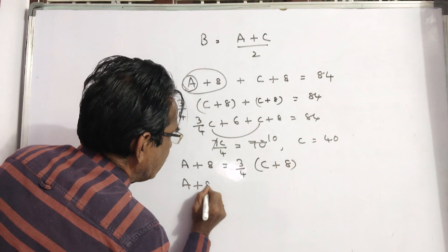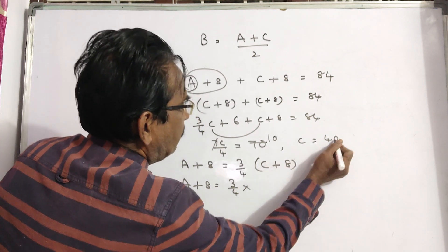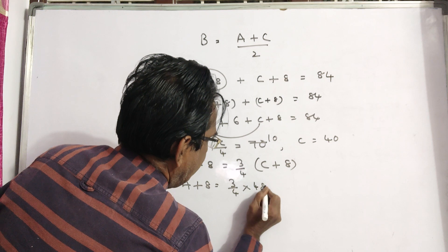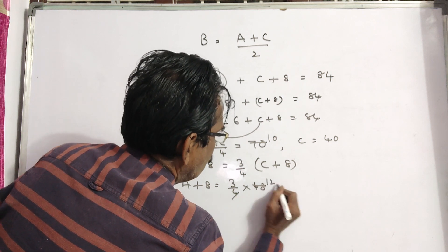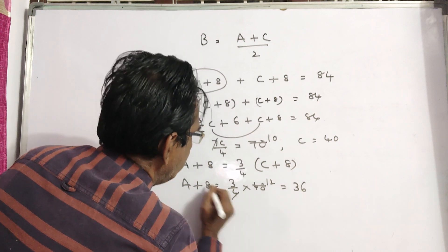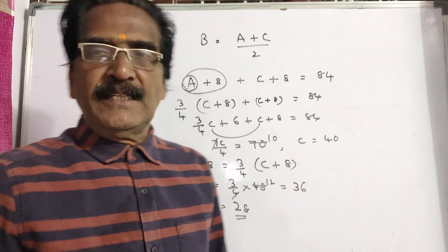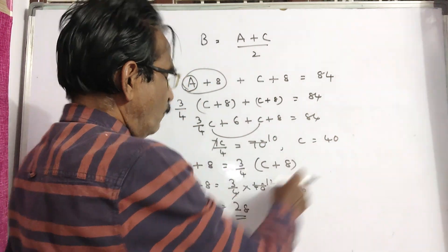So A plus 8 is equal to 3 by 4 into 40 plus 8, which is 48. 48 by 4 is 12, times 3 is 36. Then A will be 36 minus 8, which is 28. A is 28, C is equal to 40.